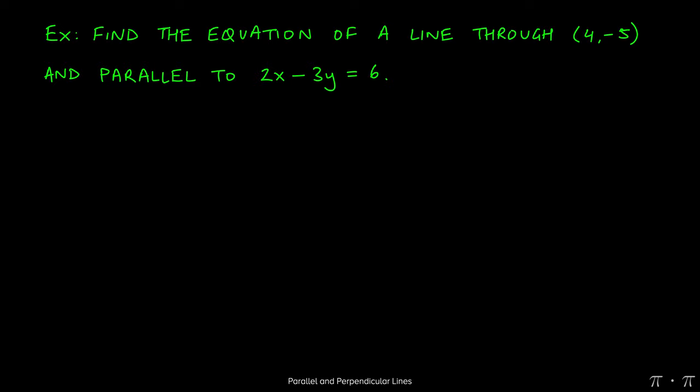Let's say we're asked to find the equation of a line that passes through 4, negative 5, but we're also given that it's parallel to 2x minus 3y equals 6.